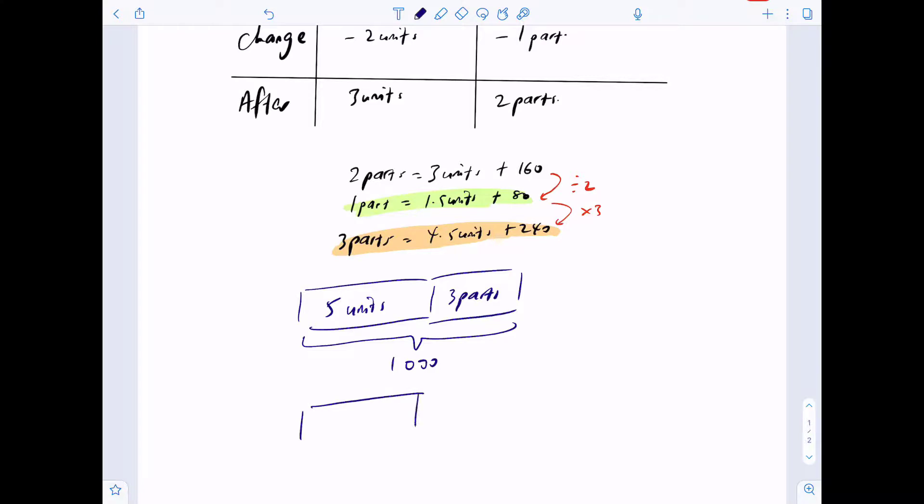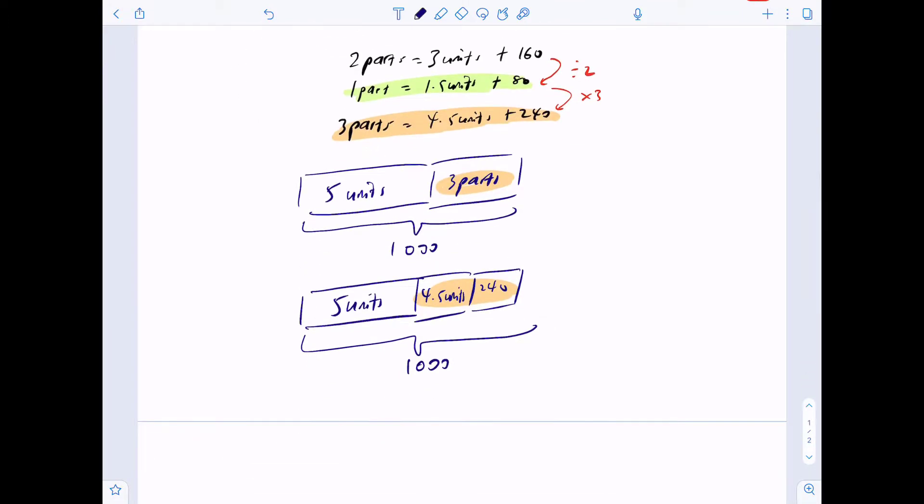We will have five units, four point five units, plus another 240. What has just happened is I've replaced the three parts with four and a half units and 240. The total of this will be 1,000.